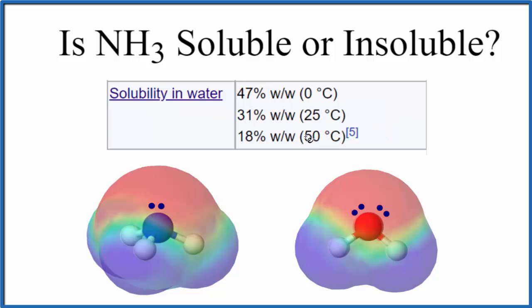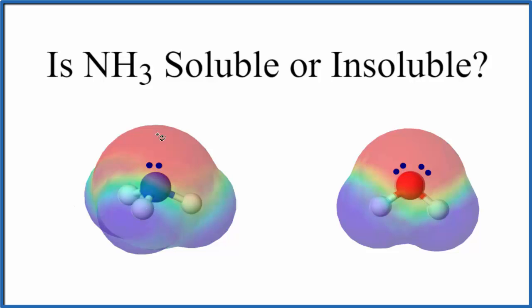So let's talk about why ammonia is so soluble in water. Both ammonia NH3 and H2O are polar molecules, so they have poles. The red, that's more negative side of the molecule, and the blue is a more positive side of the molecule.